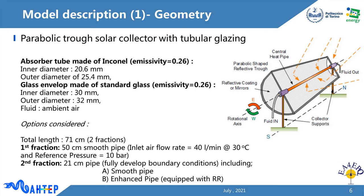In order to assess the effectiveness of Raschig ring porous media in thermal performance, a fraction of the absorber, glass envelope, and the working fluid were modeled in the simulations. The absorber tube was assumed to be made of Inconel with an inner diameter of 20.6 mm and an outer diameter of 25.4 mm. A tubular glass envelope was developed with an inner diameter of 30 mm and an outer diameter of 32 mm. A total length of 70 cm of the absorber was chosen to be analyzed.